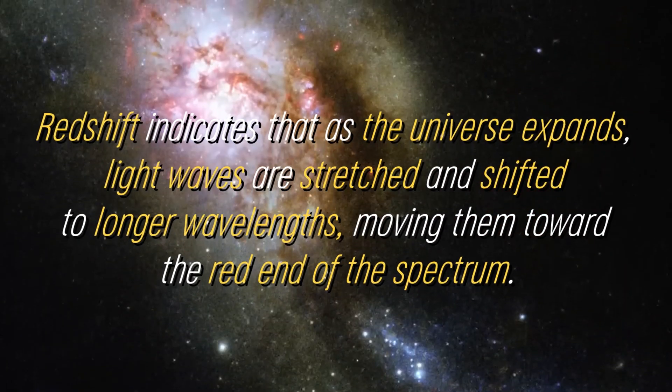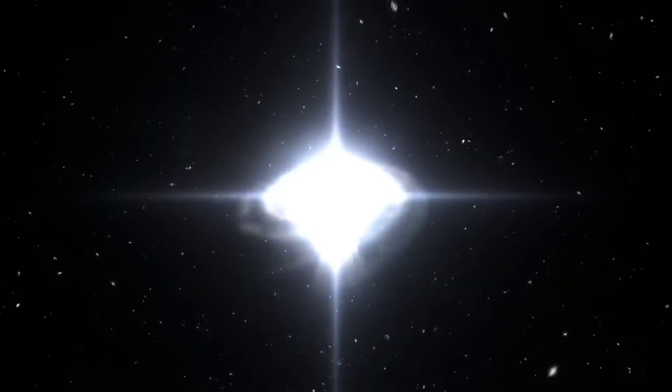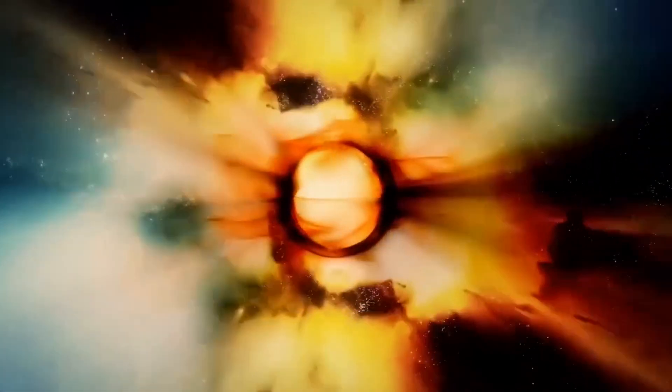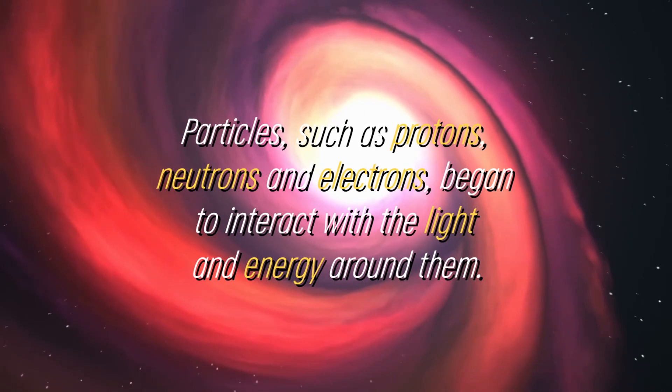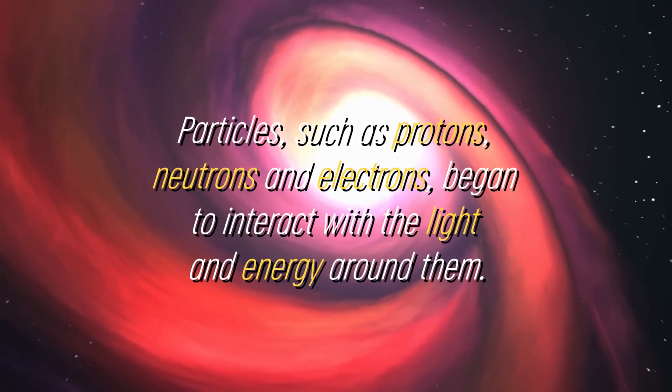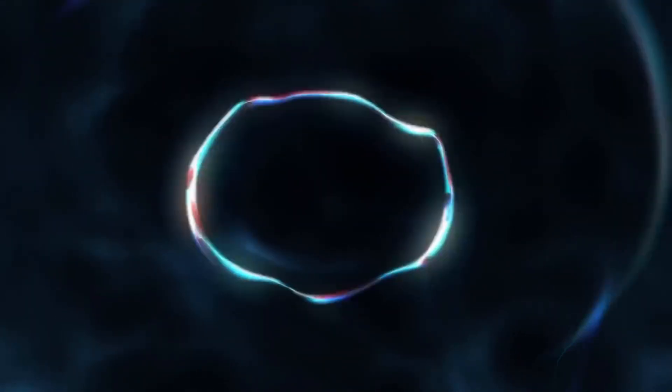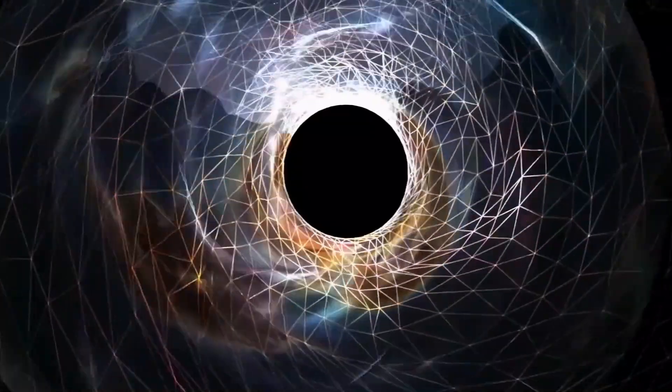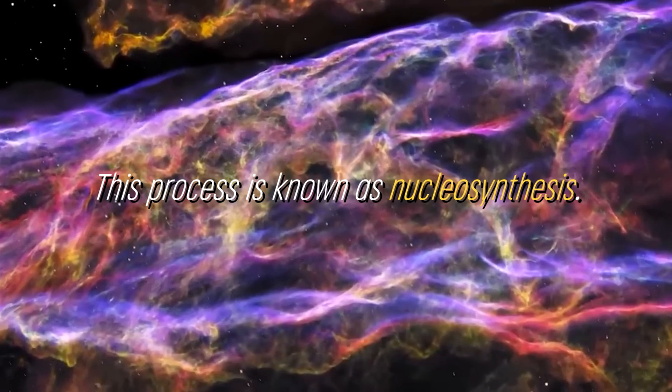During the expansion, all the stuff that makes up our universe was compressed into an incredibly small volume. It was clear that matter could not survive in such a compact space, so transformations occurred as the universe expanded and cooled. Particles, such as protons, neutrons, and electrons, began to interact with the light and energy around them. These interactions played a key role in the formation of matter in the universe during the first few minutes after the Big Bang. This process is known as nucleosynthesis.